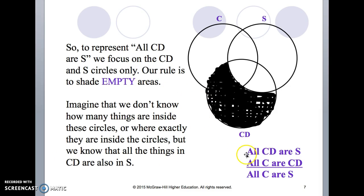In the original slides here we have all CD are S, so we shade this out to show that there's nothing. Nothing out here as a CD that's not an S, because all CD are S, everything that's a CD is included in the S circle.